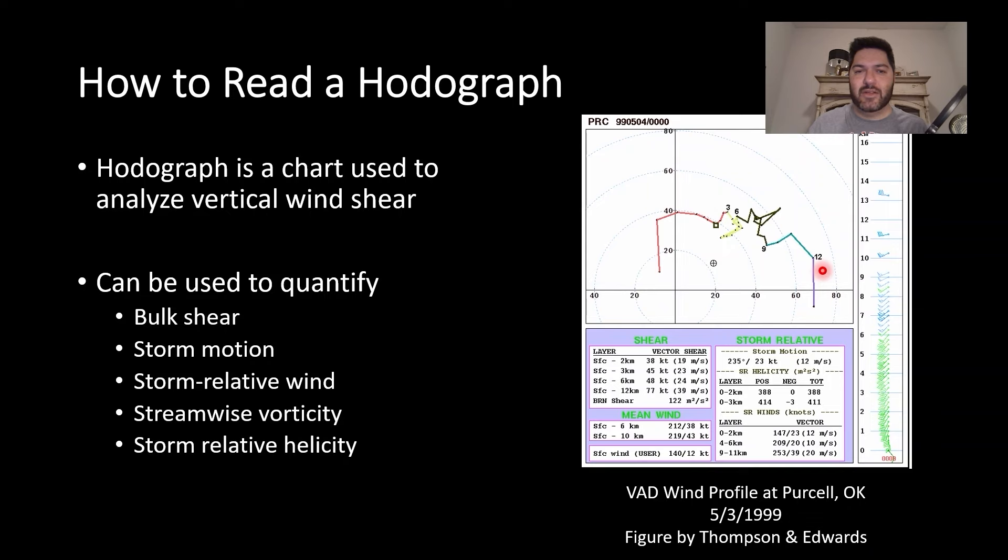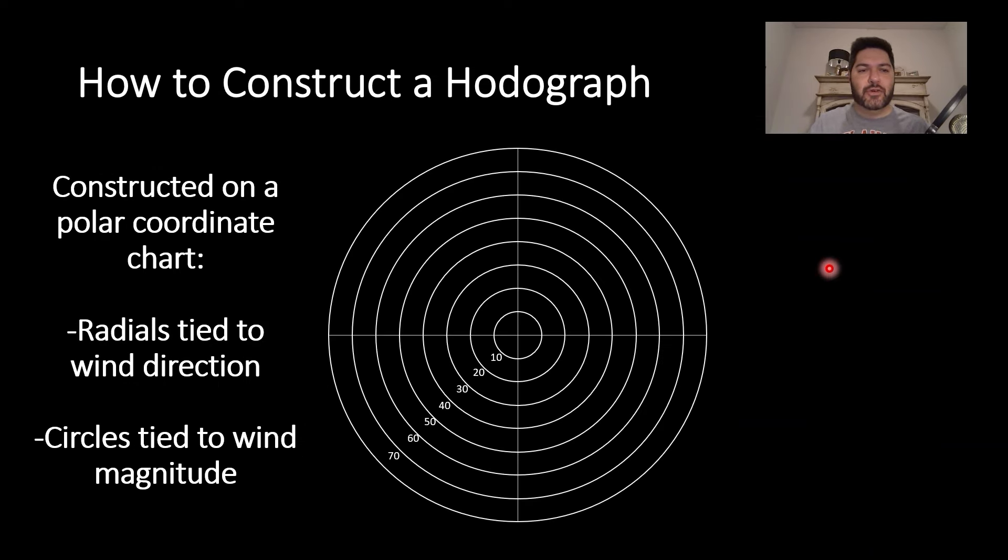How to construct a hodograph: these are constructed on a polar coordinate chart, so that means the radials are tied to wind direction. If you can imagine, this is like north, east, south, and west. The circles are tied to wind magnitude, so you start at the center and as you move out - 10, 20, so 10 knots, 20 knots, 30 knots, 40 knots, and so on.